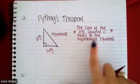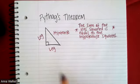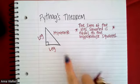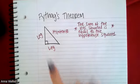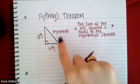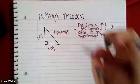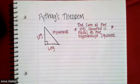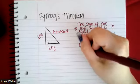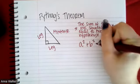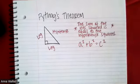The theorem states that the sum of the legs squared is equivalent to the hypotenuse squared. In formula form, you may have heard of it: a² + b² = c².